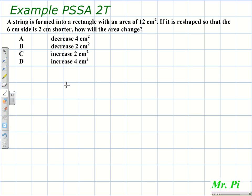A string is formed into a rectangle with an area of 12 square centimeters. If it is reshaped so that the 6 centimeter side is 2 centimeters shorter, how will the area change? I like to attack this problem by making a diagram of what I do know.